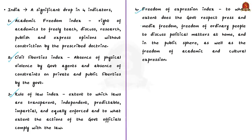Academic freedom means the right of academics to freely teach, discuss, research, publish, and express opinions without constraint by prescribed doctrine. Civil liberties refers to the absence of physical violence by government agents, and the absence of constraints on private and public liberties by the government. Rule of law reflects to what extent the laws are transparent, independent, predictable, impartial, and equally enforced, and to what extent government officials' actions comply with the law.